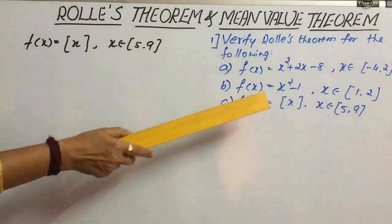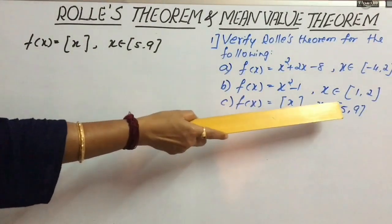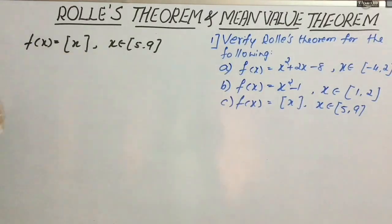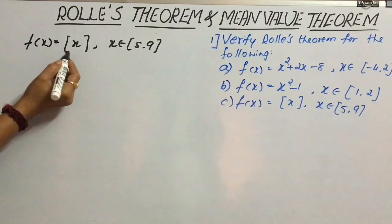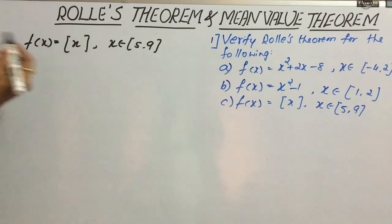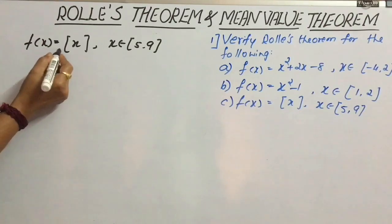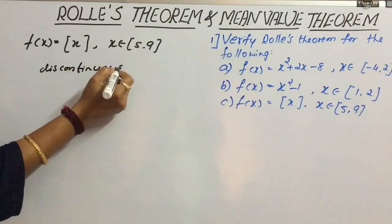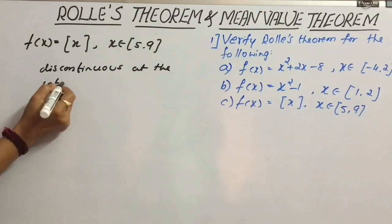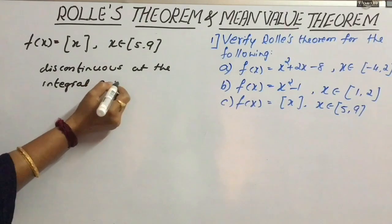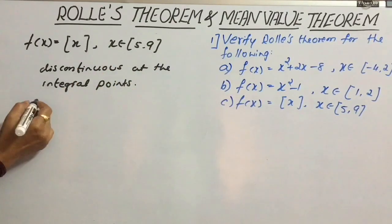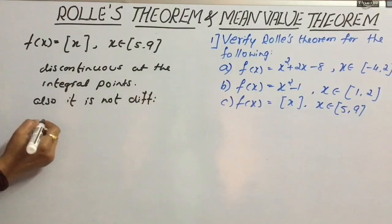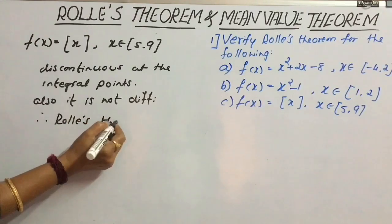Move on to the next question. f(x) = greatest integer of x, where x belongs to the closed interval [5, 9]. We know that the greatest integer function is discontinuous at the integral points. Therefore, f(x) = ⌊x⌋ is discontinuous at the integral points in the closed interval [5, 9]. Also, it is not differentiable. Therefore, Rolle's theorem does not hold good.